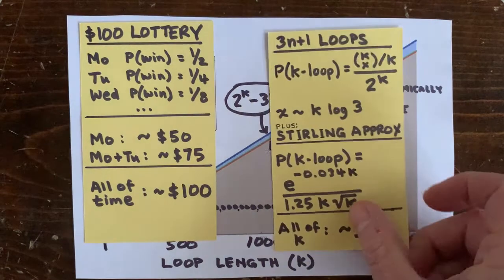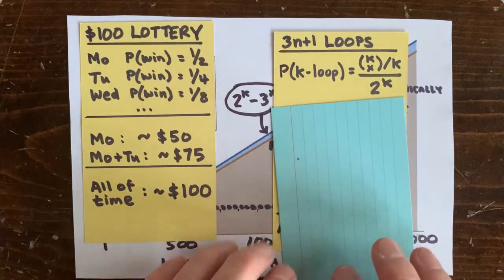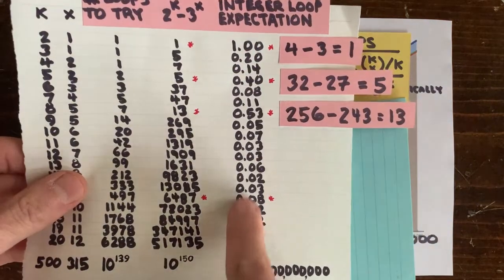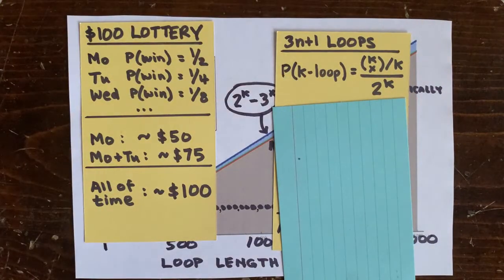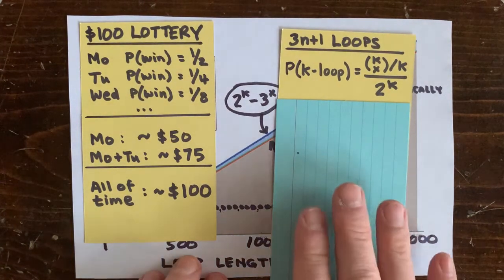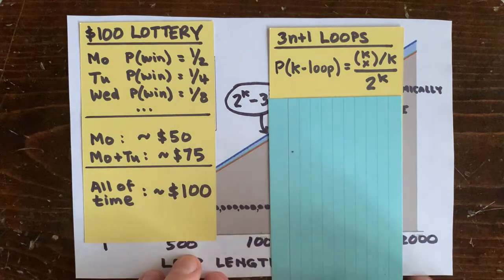And the same thing happens in the 3n plus 1 problem. If we add up this column of numbers for all loop lengths up to infinity, we get an expectation for the total number of 3n plus 1 loops in existence. Which it turns out converges to a finite number. So how do we know that?